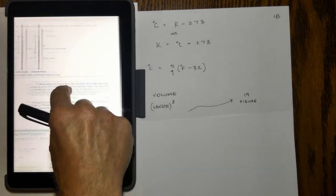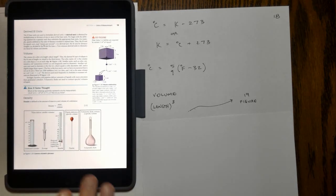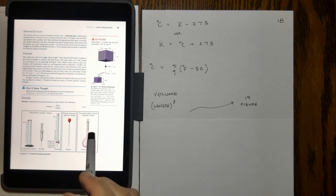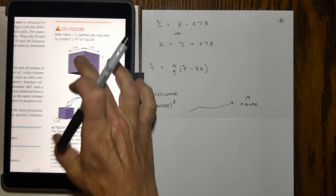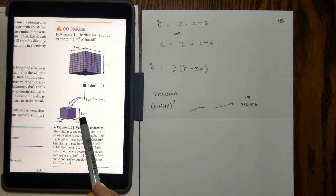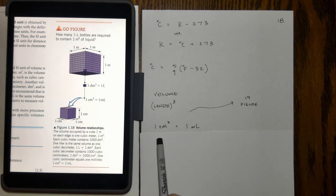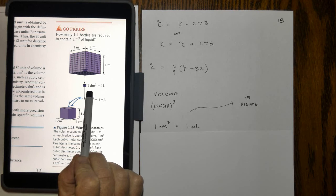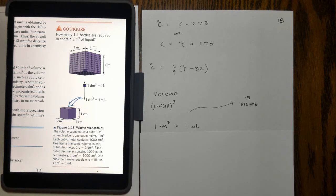Another measurement we'll look at in chemistry class is volume. Volume is actually a derived unit because volume is length times width times height, or it's a cubed unit of length. In the figure on page 19, you can see that a 1 centimeter by 1 centimeter by 1 centimeter block is called a cubic centimeter, 1 times 1 times 1 equals 1 cm cubed, and has a new name called a milliliter. Interchanging these two units is one of the tricky ways that people try to make things difficult in chemistry class. Just know that milliliter and cubic centimeter are the same.